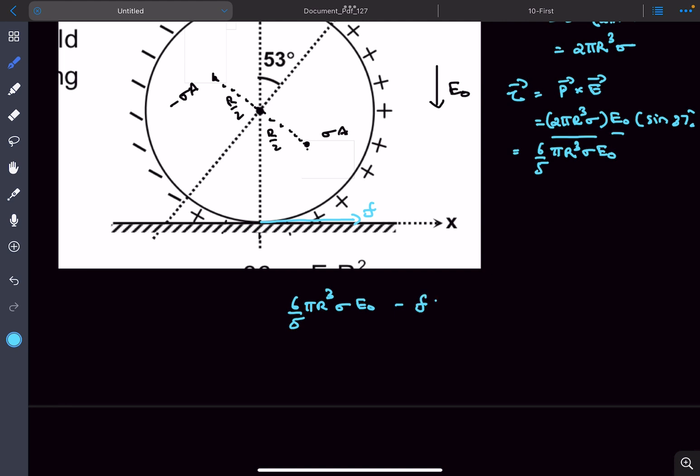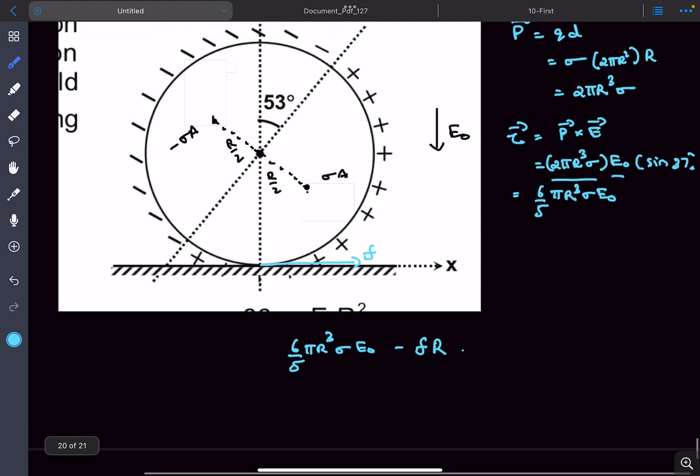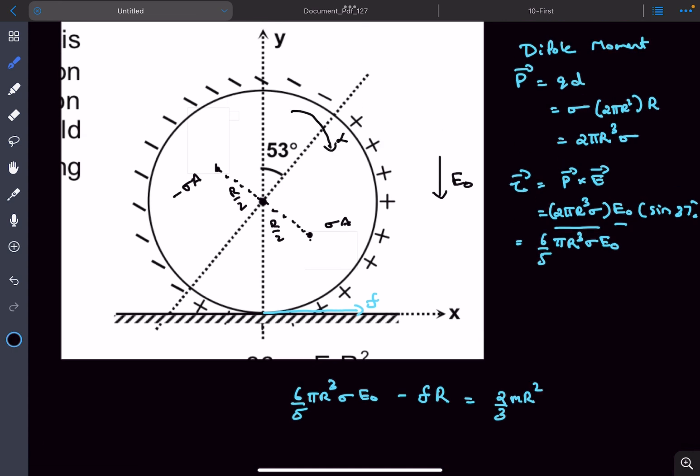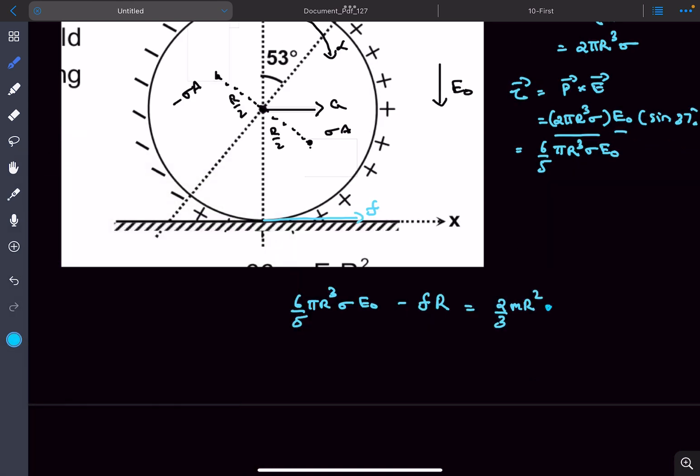This equals the moment of inertia about the center of mass, which is 2/3 mR², times α. Taking clockwise torque as positive, let clockwise α be positive. Let the acceleration of the center of mass be a. This gives 2/3 mR²α as equation 1.